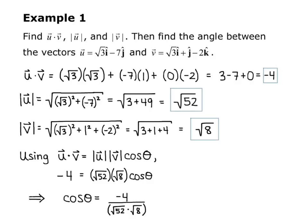So think about, if you have cosine theta equals a number, how do you find the angle? You take the inverse cosine. So that's what we're going to do to find theta. We have theta equals the inverse cosine of negative 4 over the quantity square root of 52 times square root of 8.